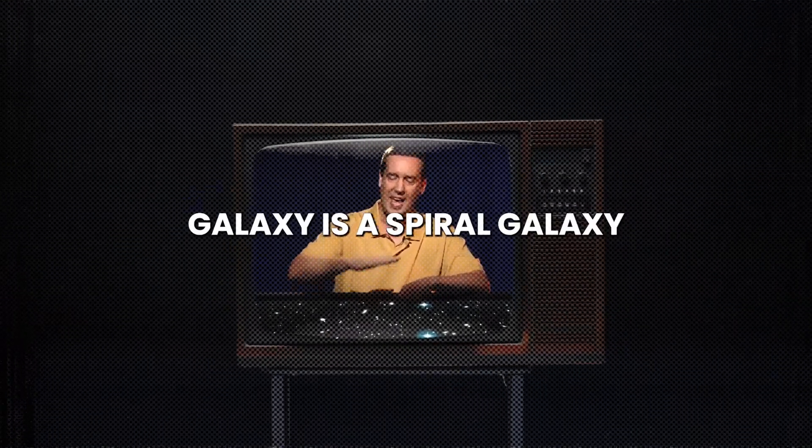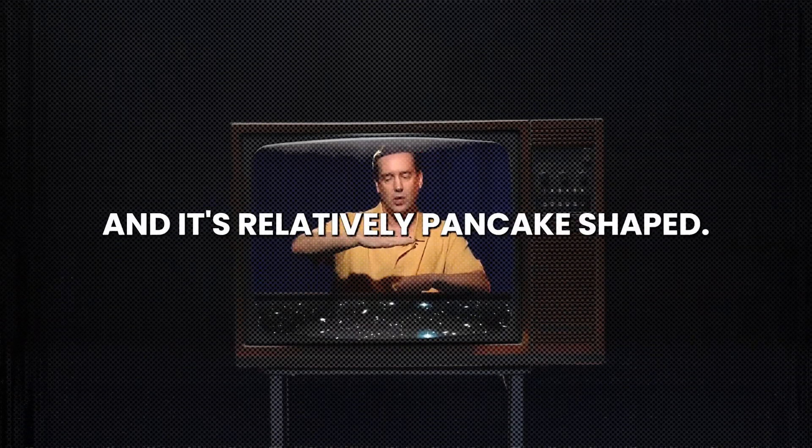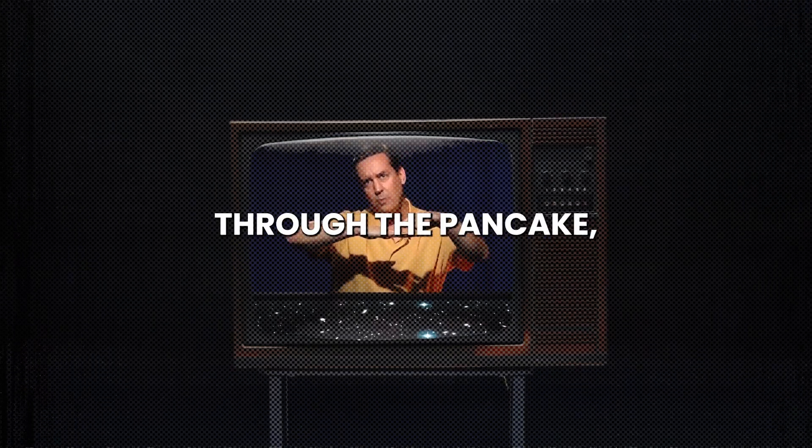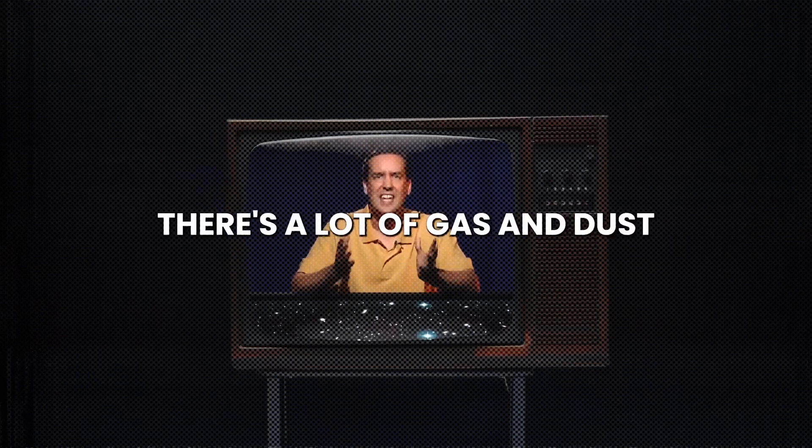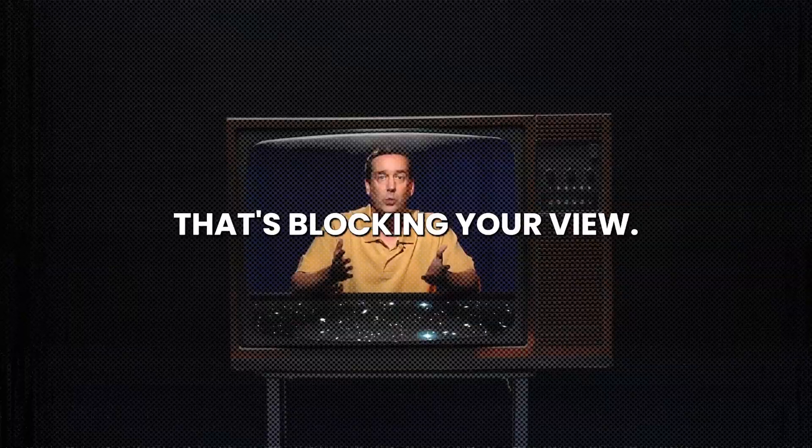The Milky Way galaxy is a spiral galaxy, and it's relatively pancake-shaped. If you're looking out through the pancake, there's a lot of gas and dust that's blocking your view.